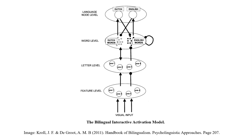The model is very much like TRACE in its conception. There is a feature level, a position level, a letter level, and then a word level. At the word level, both Dutch and English words are activated in the same way, and words are inhibiting each other — that aspect of lateral inhibition is also there. Then there is the language node level, representing the decision of which language performance has to be in. Dutch words excite the Dutch language node and English words excite the English language node. The Dutch words are inhibiting English words and the English language nodes are inhibiting Dutch words — so that cross-inhibition is also happening.